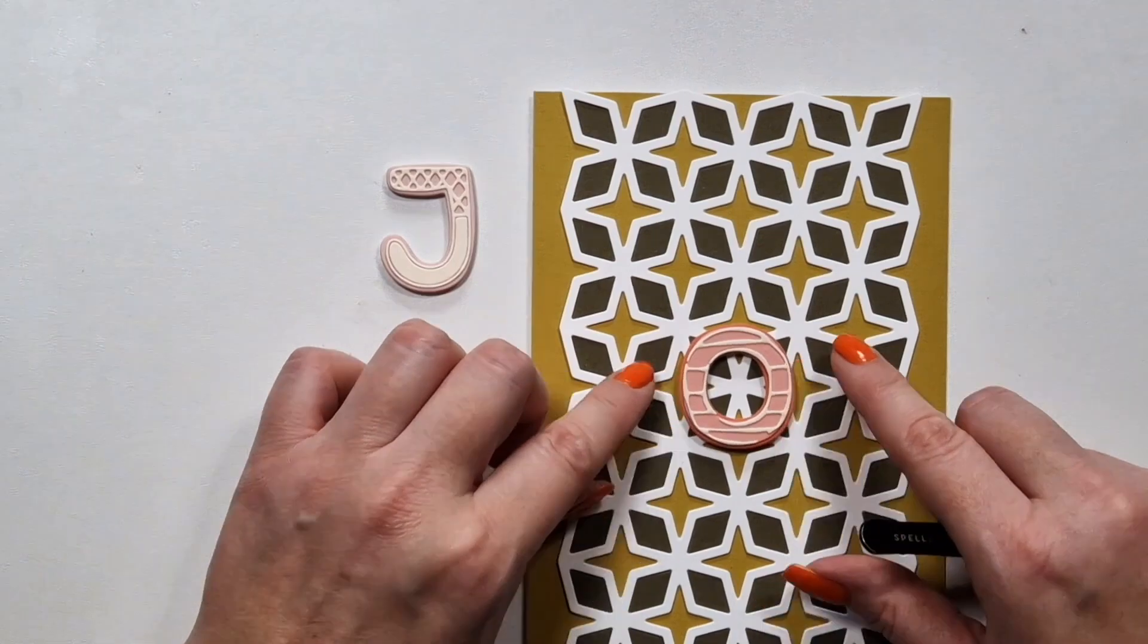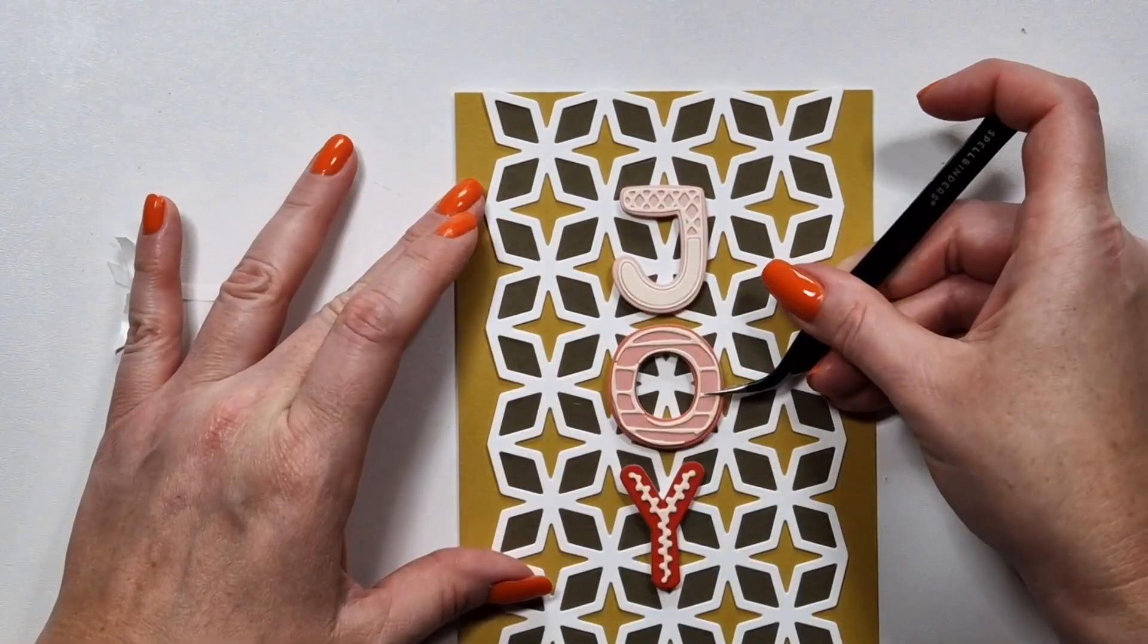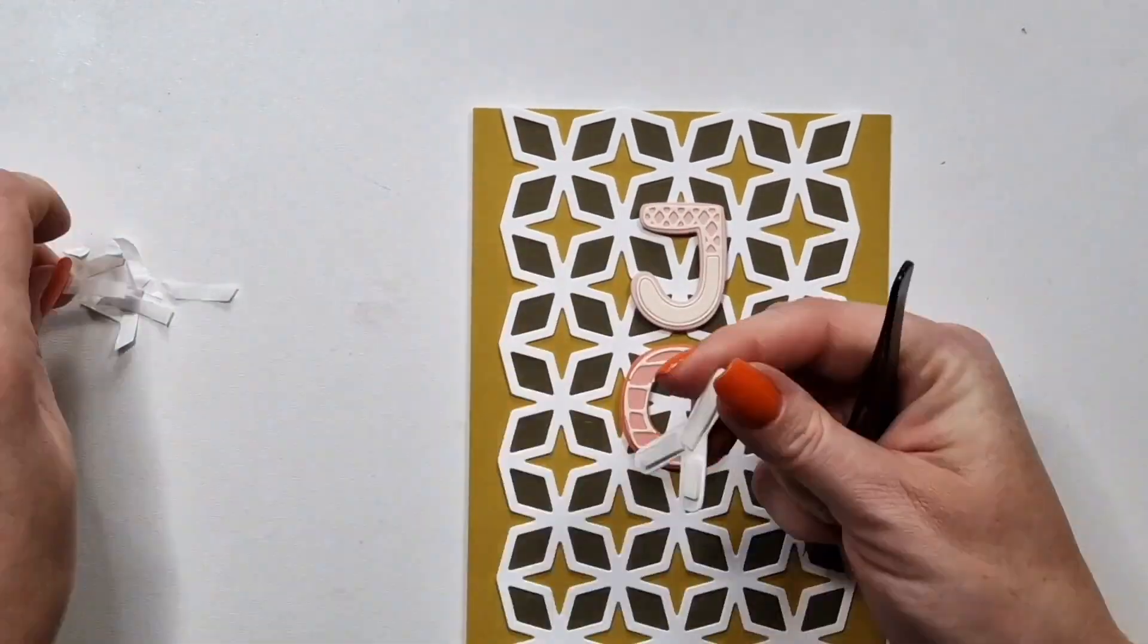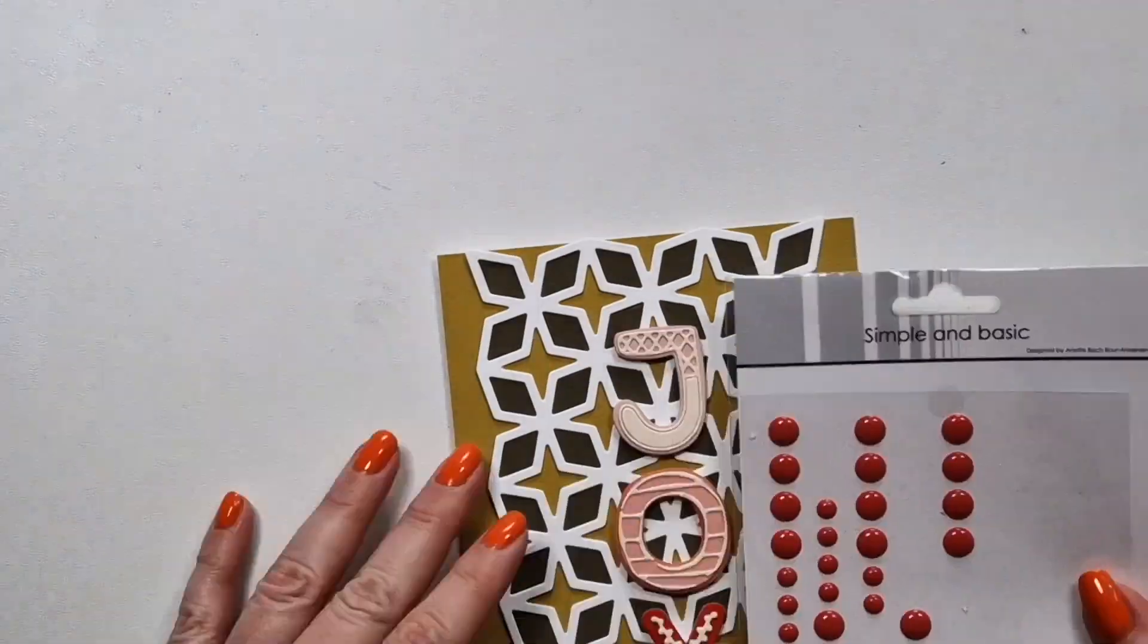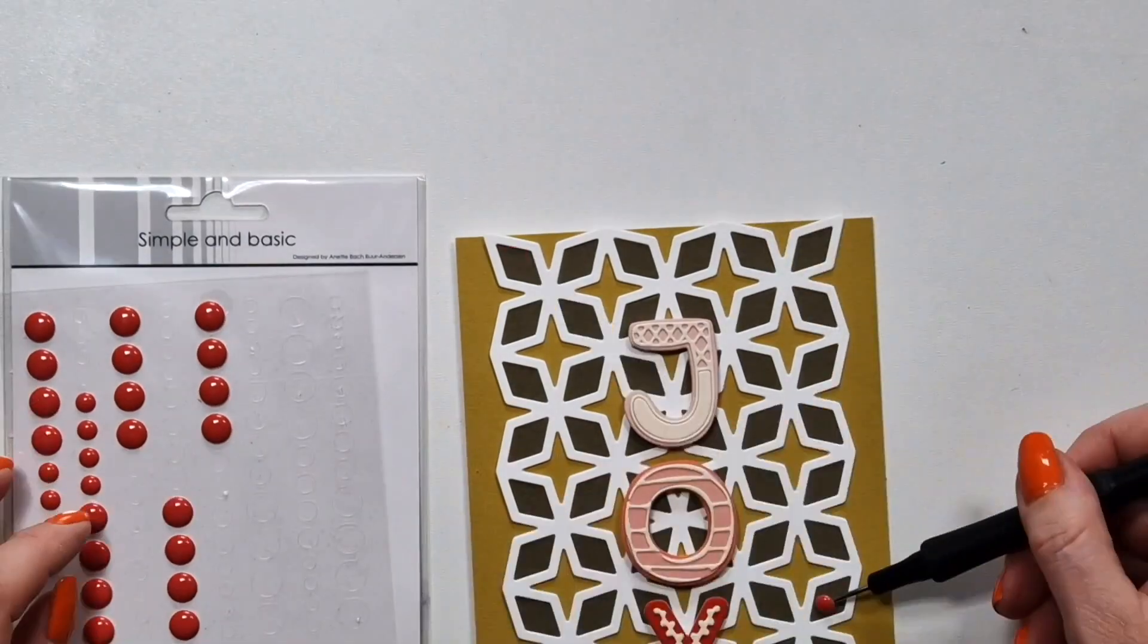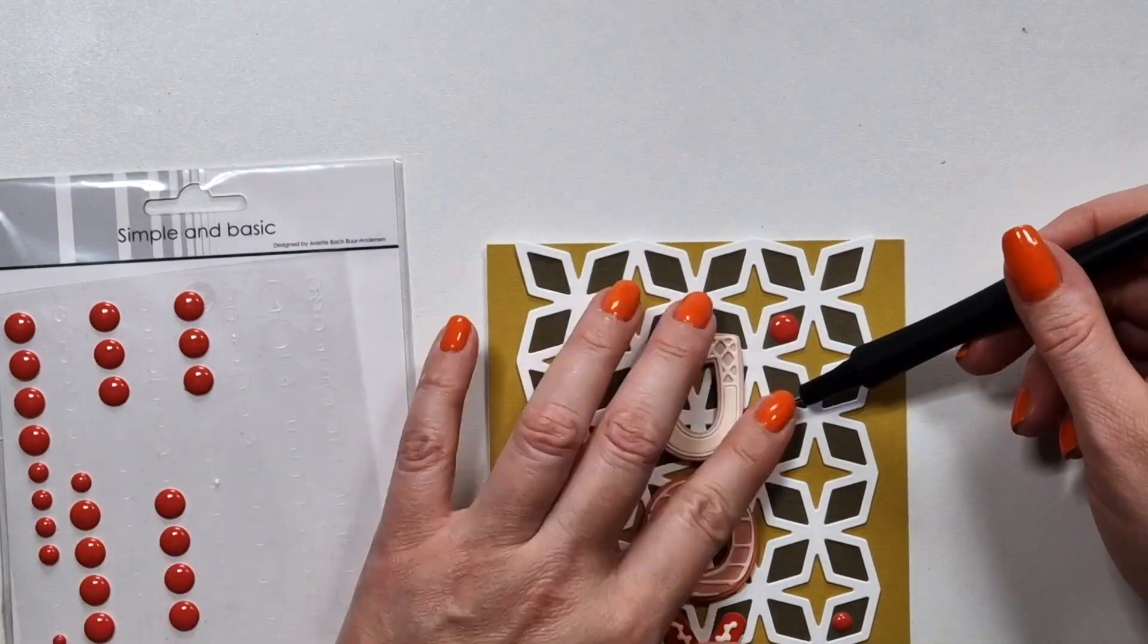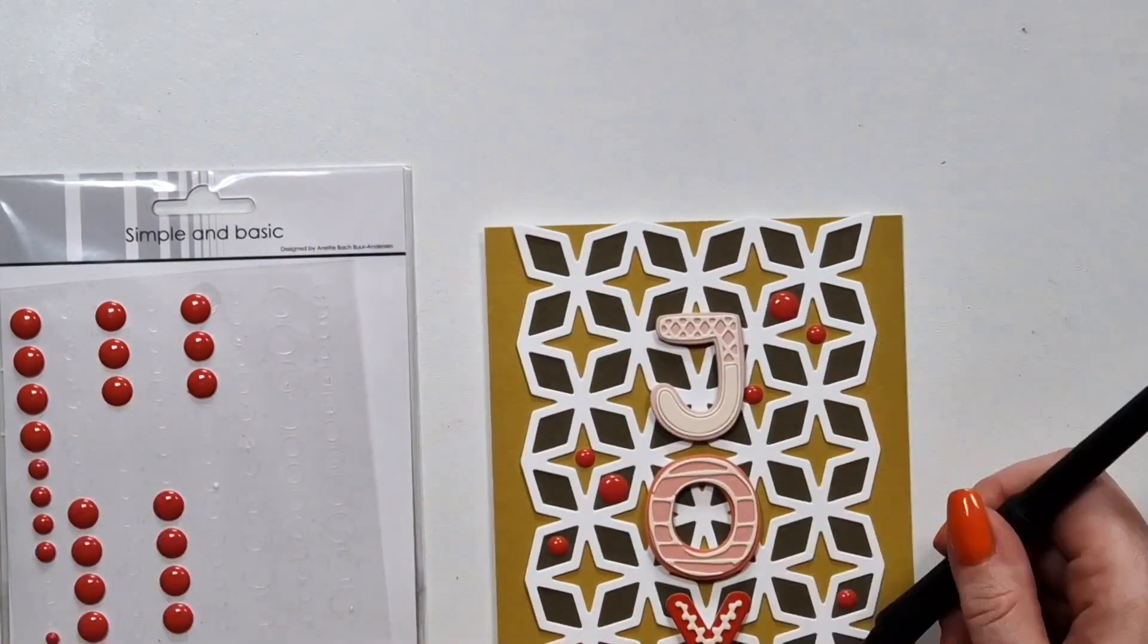This background, I had a bit of a headache with this one. I did not know how to finish it, but then I die cut the joy from the gingerbread joy set that is also new. And I just used the same colors that I used on the other cards to create a colorful sentiment that still stands out from that busy background. And it still was so simple. I decided to add some red enamel dots. These are also available in the shop.